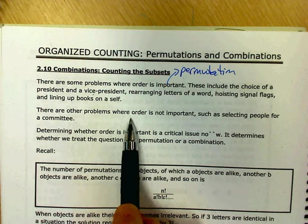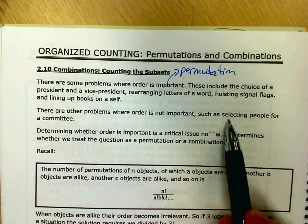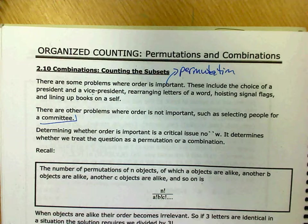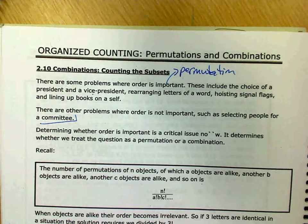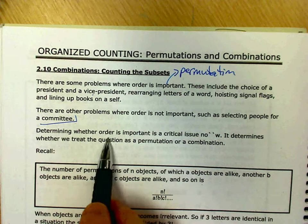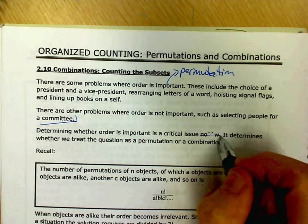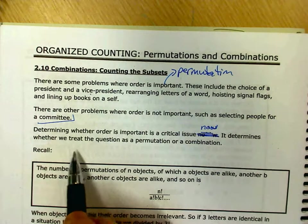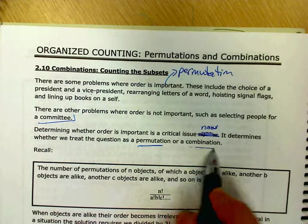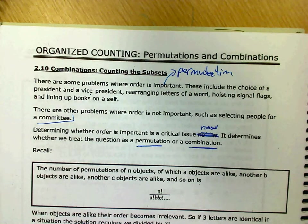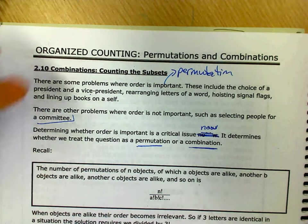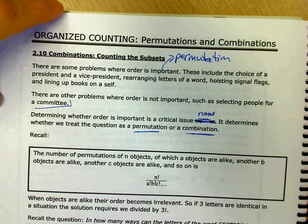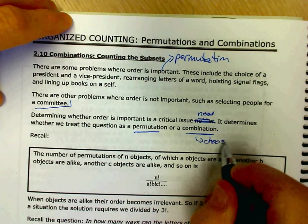There are other problems where order is not important such as selecting people for a committee. When people are on a committee, we only care that they're on the committee. We don't care what order they sit at the table. It just isn't important. Determining whether order is important is a critical issue now. It determines whether we treat the question as a permutation or combination. So now that maybe the hardest, one of the challenging things on a test is you have to decide whether order is important or whether order is not important.